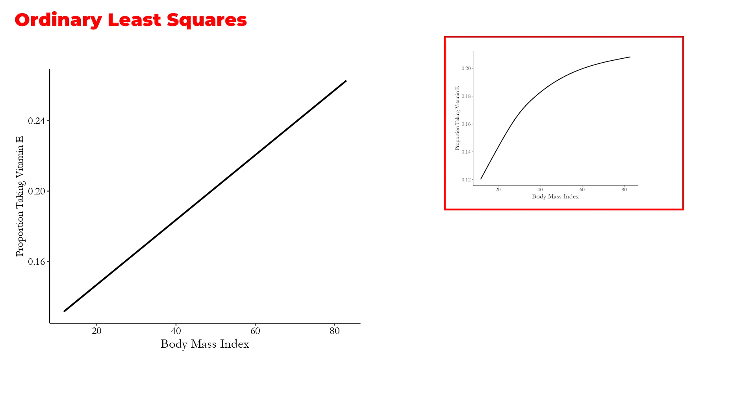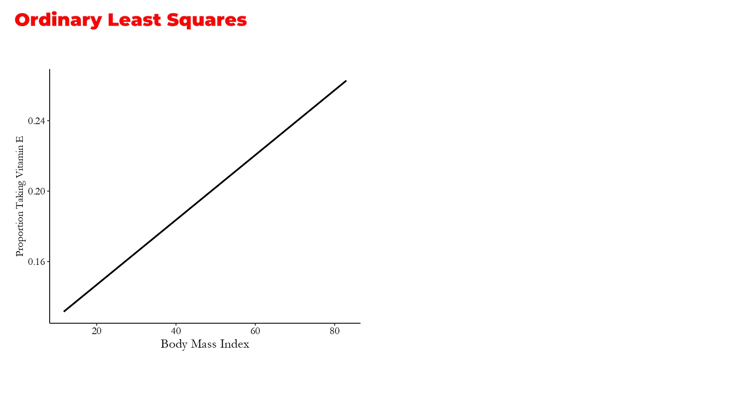In doing so, we get a couple of different things. The first is that this is a much easier relationship to describe. With the LOESS curve you could see it on the graph and say it's growing quickly at first then shallows out, but reporting the values that describe that can be a little bit trickier. With a straight line, you can very easily say something like: a one-unit change in body mass index is associated with a certain percentage point change in how many people take vitamin E. Very straightforward.